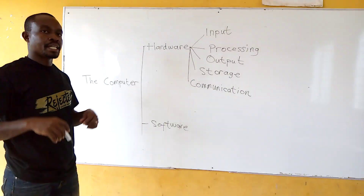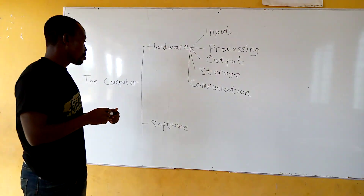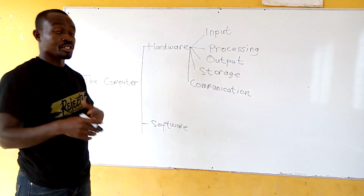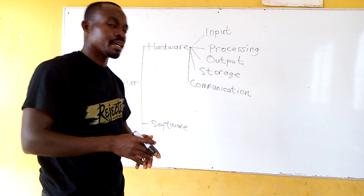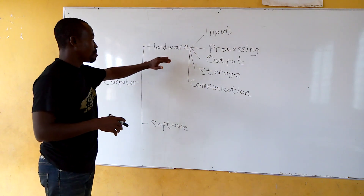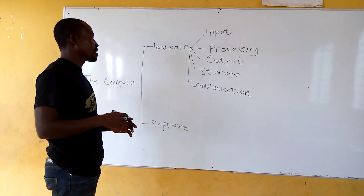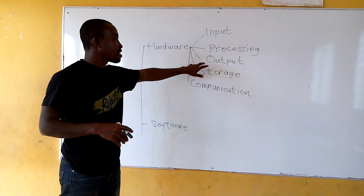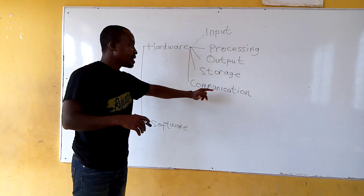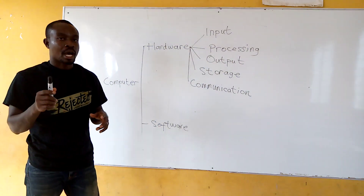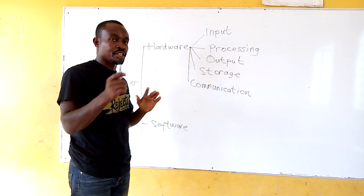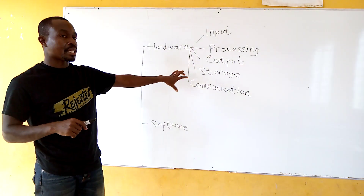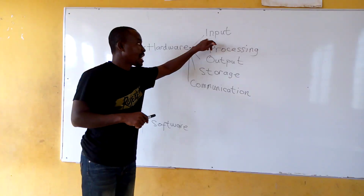The computer is an electronic device used to change data — convert data into meaningful information, which is used in making decisions. The two main parts are the hardware and the software. On the hardware side, we have input hardware, processing hardware, output hardware, storage hardware, and communication hardware. I'm going to help you make it easier. So, input hardware: what types of hardware are used to put data into the computer?